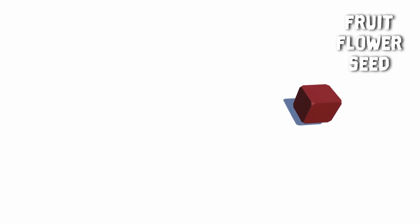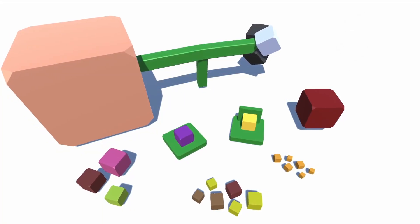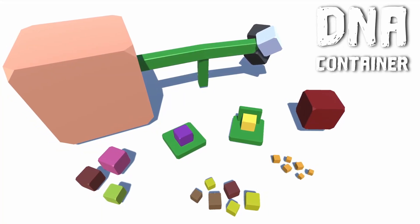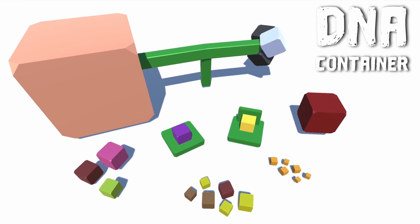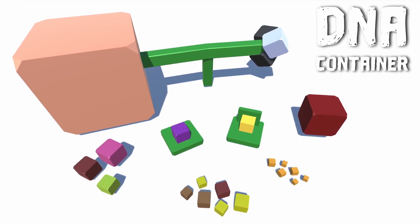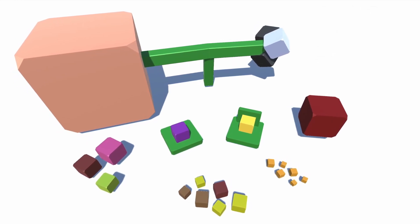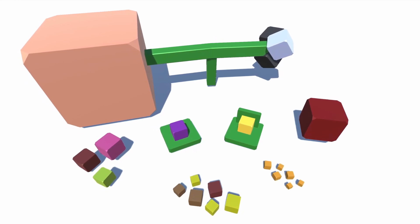And the third one is the fruit-flower-seed. I have yet to decide an official name, but it's basically a DNA container that can start a new plant. It could also act as pollen, spores, pistil, or even new organs for communication between plants.